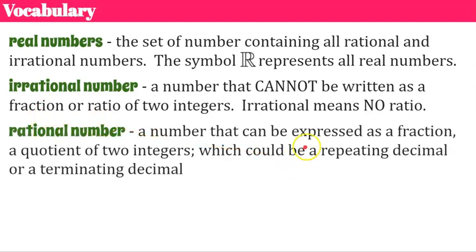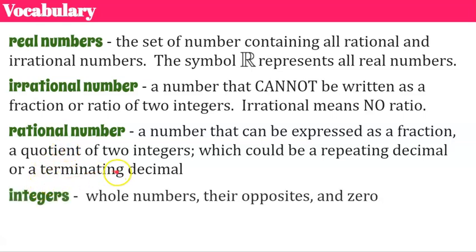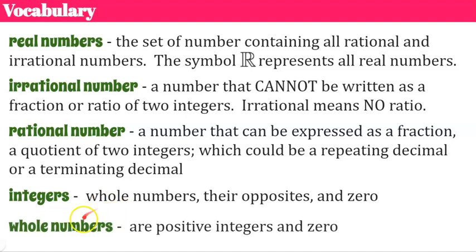A rational number is a number that can be expressed as a fraction or a quotient of two integers, which could be a repeating decimal or terminating decimal. An integer is a whole number and its opposites — don't forget zero is part of the integer family. Whole numbers are the positive integers and zero.